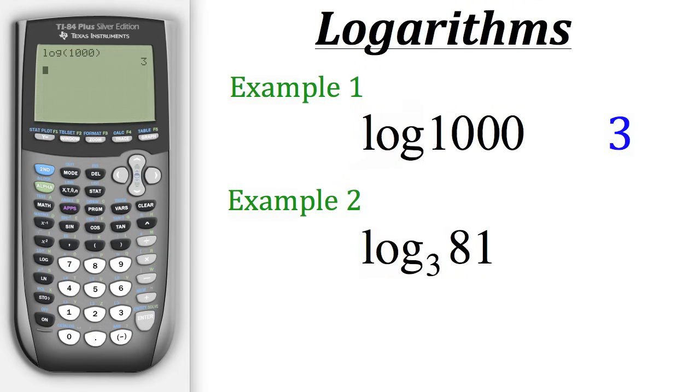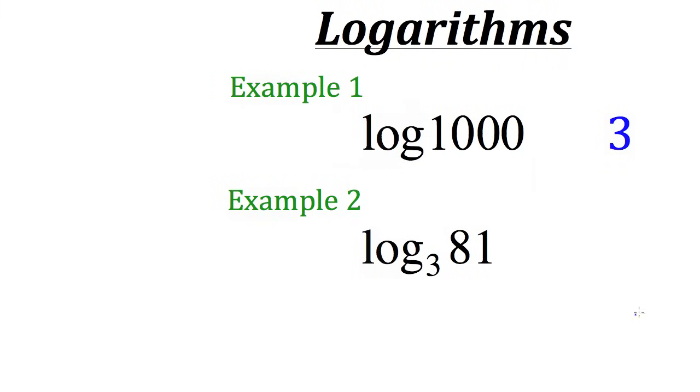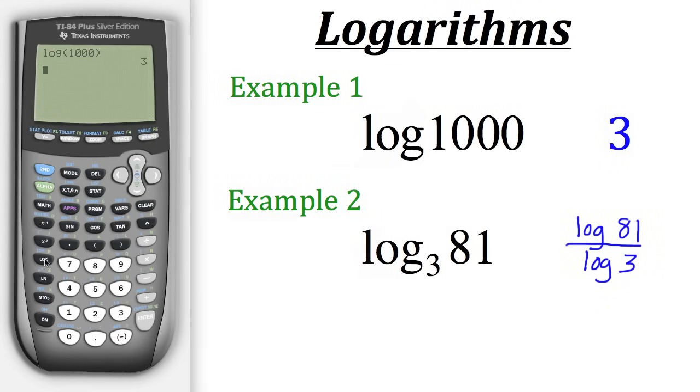Well, what we could do is we could utilize a logarithmic property. So log with a base of three of eighty-one is the same thing as doing log of eighty-one divided by log of three. So let's put that into our calculator. So we have log eighty-one divided by log of three and hit enter. Now we can see that that gives us a result of four.